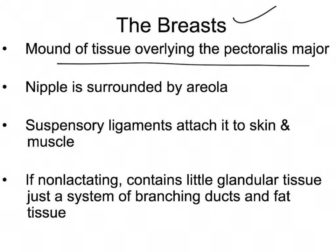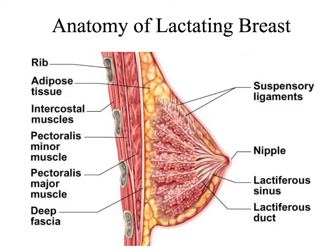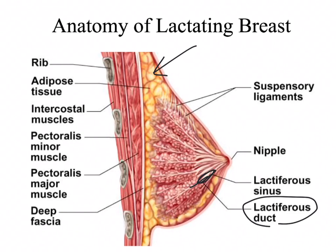Now breasts. It's a mound of tissue overlying the pectoralis major, with nipples surrounded by the areola. Suspensory ligaments are going to attach the breast to the skin and the muscle. When it's not lactating, it contains little glandular tissue — there are lots of ducts and lots of fat. In the lactating breast, you can see lactiferous ducts, sinuses where the milk is going to accumulate, adipose tissue, and mammary tissue where the milk is going to develop.